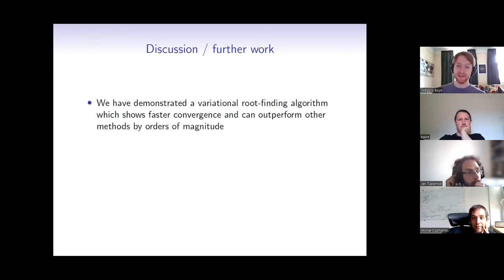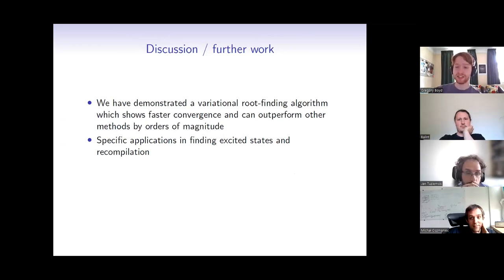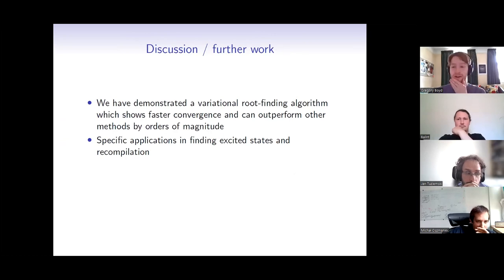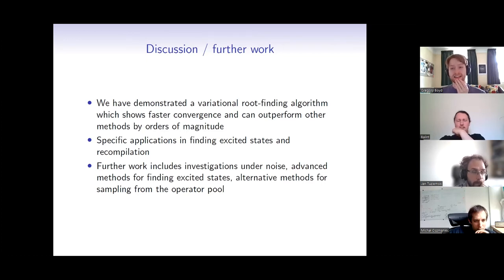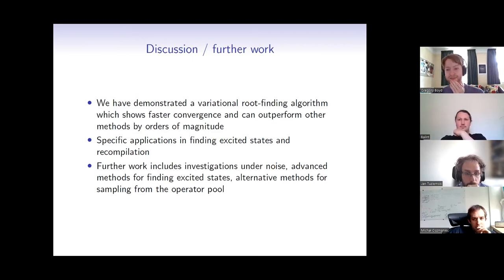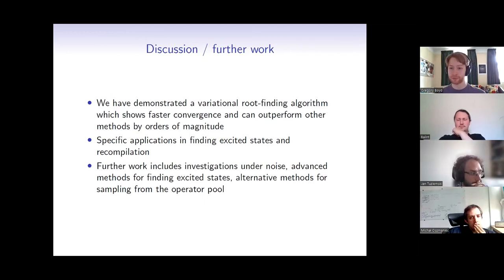To conclude: we've demonstrated a variational root-finding algorithm that often shows drastic improvements and can outperform other methods, sometimes by orders of magnitude. Specific applications include finding excited states, recompilation, and indeed any other problem solved by finding any eigenstate of some operator. Further work includes more advanced investigations of noise, methods for finding highly excited states, and alternative methods for using classical shadows to more cleverly sample from the operator pool rather than randomly.